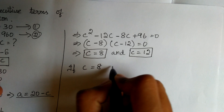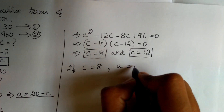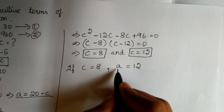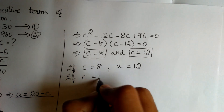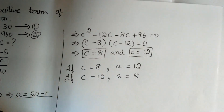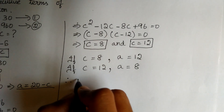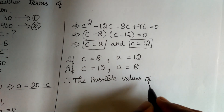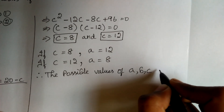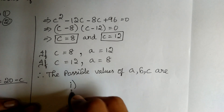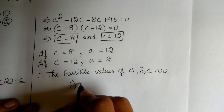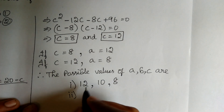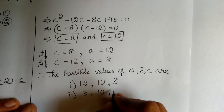Therefore, if C is equal to 8, the value of A is equal to 12. When we substitute the values of C and B in equation 1, we get A as 12. Likewise, if C is equal to 12, the value of A is equal to 8. Therefore, the possible values of A, B, and C are: first, A equals 12, B equals 10, C equals 8; and second, A equals 8, B equals 10, C equals 12.